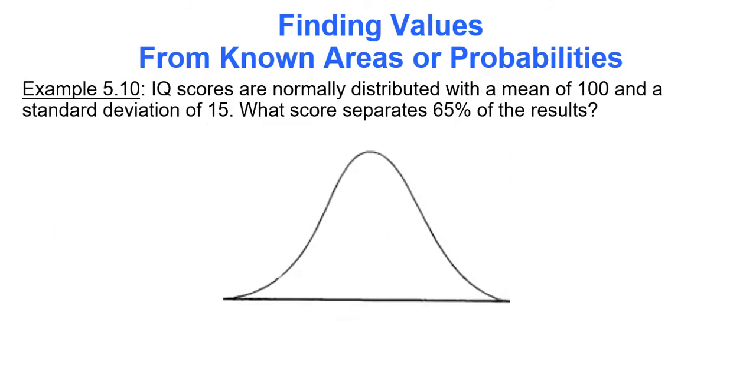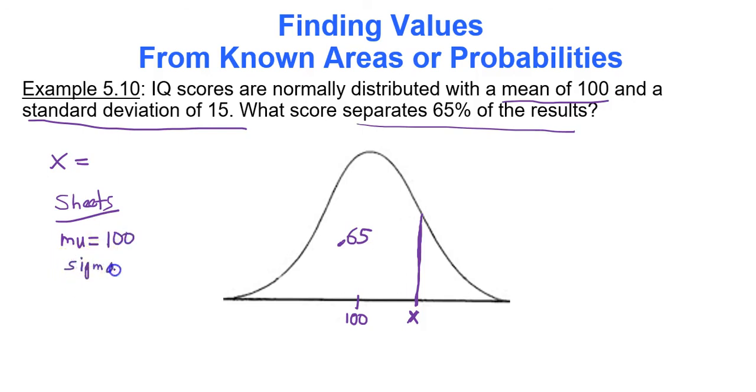Let's do another example. IQ scores. Again? Yeah. IQ scores are normally distributed with a mean of 100, standard deviation of 15. What score separates 65% of the results? And my intention here, after I put my mean of 100 in the middle, is I'm looking for the data value that has 65% of the results below it. That's what my intention was here. So I'm looking for the data value whose area to the left is .65. So Google Sheets. What is your mu? 100 you say. What is your sigma? We're making our list. And what is the area to the left? You need area to the left to find the data value. Well, it's 0.65.